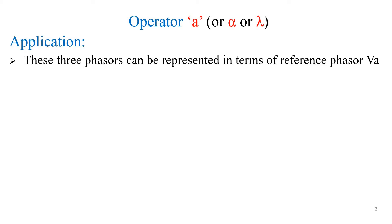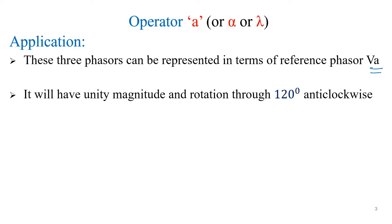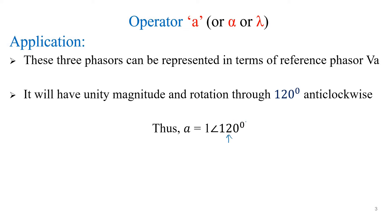So if you consider an unbalanced system, we have three phases. We are considering the unbalanced voltages as Va, Vb, Vc and currents as Ia, Ib, Ic. Suppose if you want to represent all these three phasors with respect to a reference phasor — it need not be only Va; it can be Vb or Vc also. So what is the value of operator A? Operator A will have unity magnitude and rotation through 120 degrees, represented as 1∠120°. It will rotate the vector in anti-clockwise direction — this is very very important.